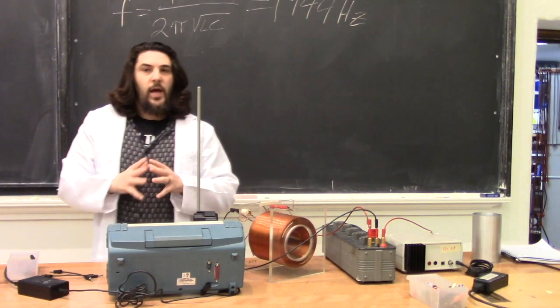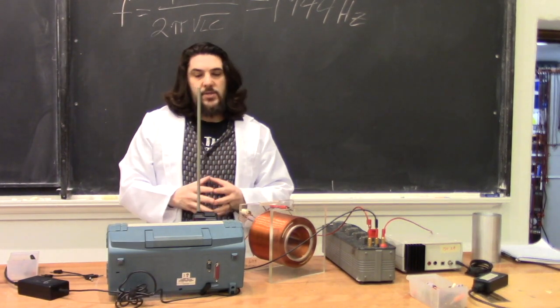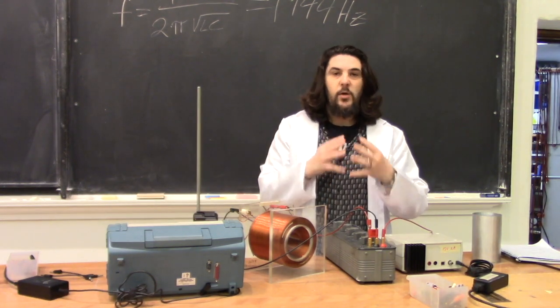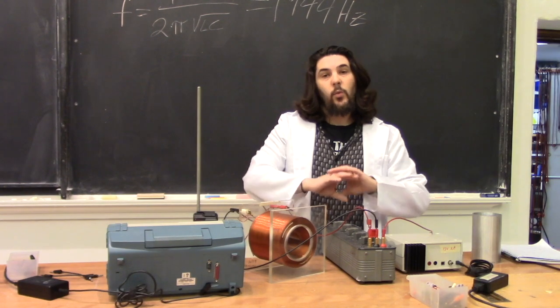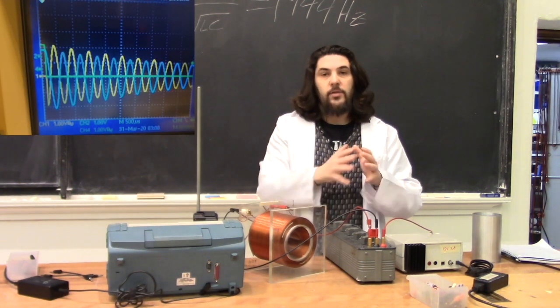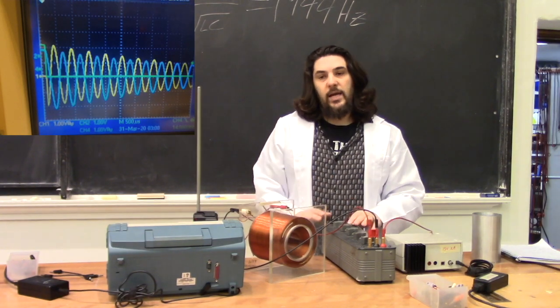Now, let's look at what happens whenever we charge up a capacitor, and then release the voltage and let it ring back and forth across the circuit. Whenever we have as low a resistance as we can get, the circuit will be underdamped. So, the inductor and the capacitor will ring back and forth and slowly, exponentially decay to zero.